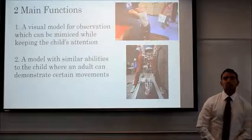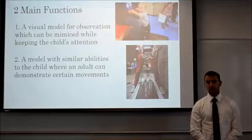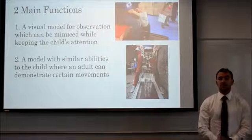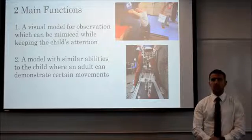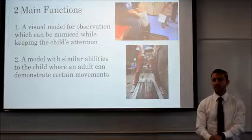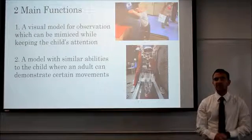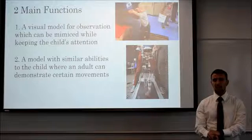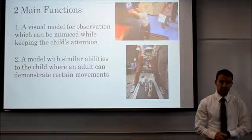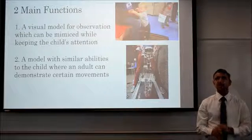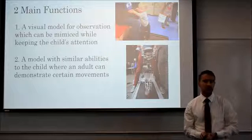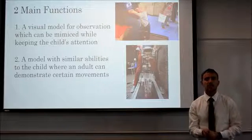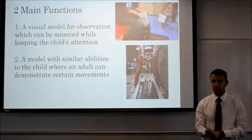Our robot is going to serve two primary functions. The first is to be a visual model for the child — we want the child to mimic the behavior the robot exhibits. The second is to serve as an intermediary between the child and the physical therapist. This will allow us to relieve social pressure which physical or social interaction with that child may produce.